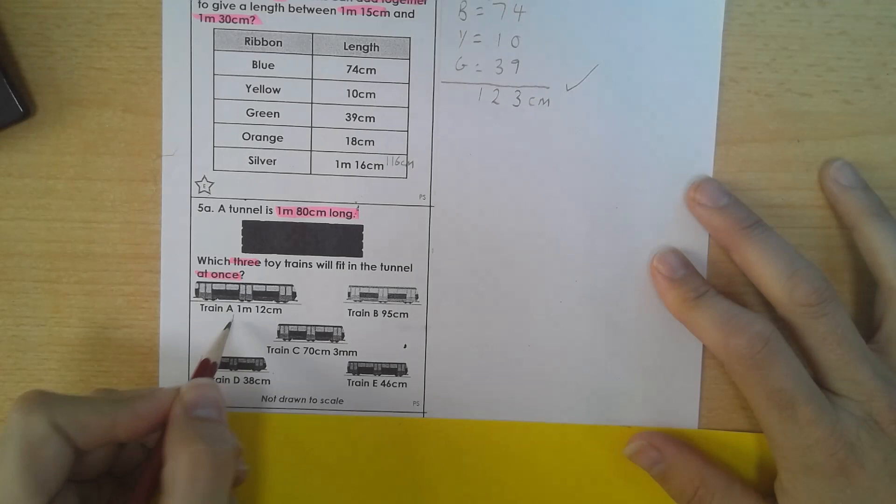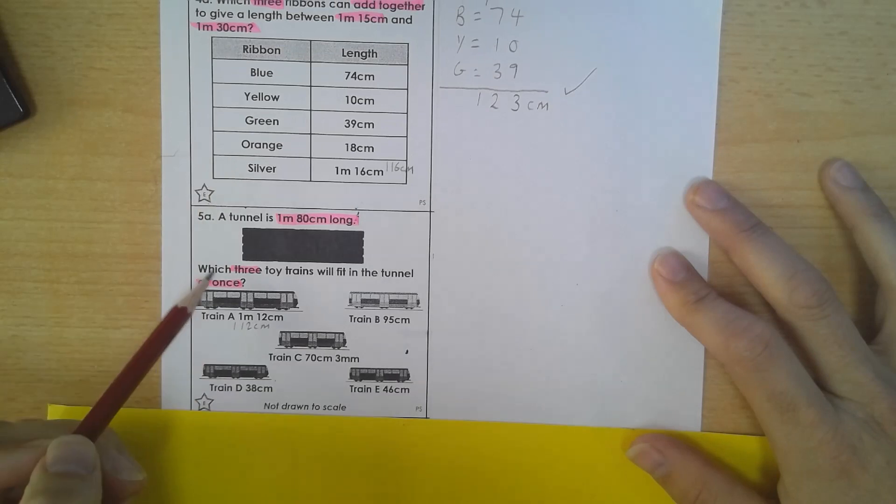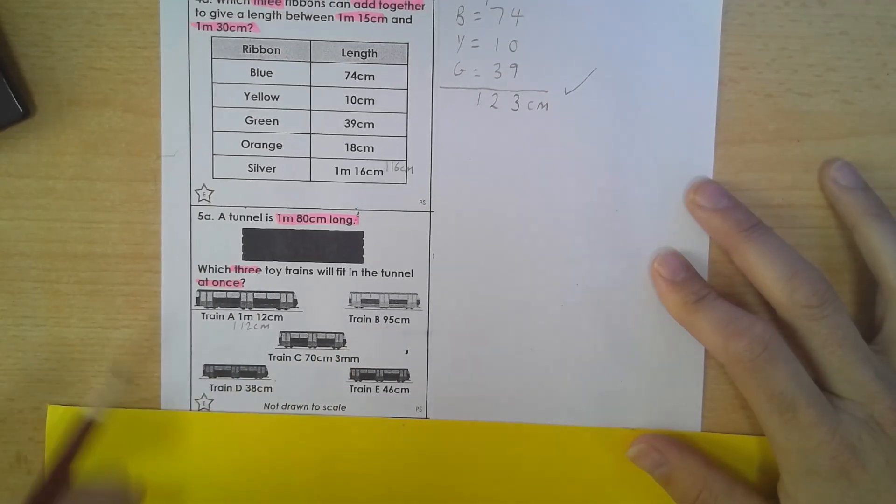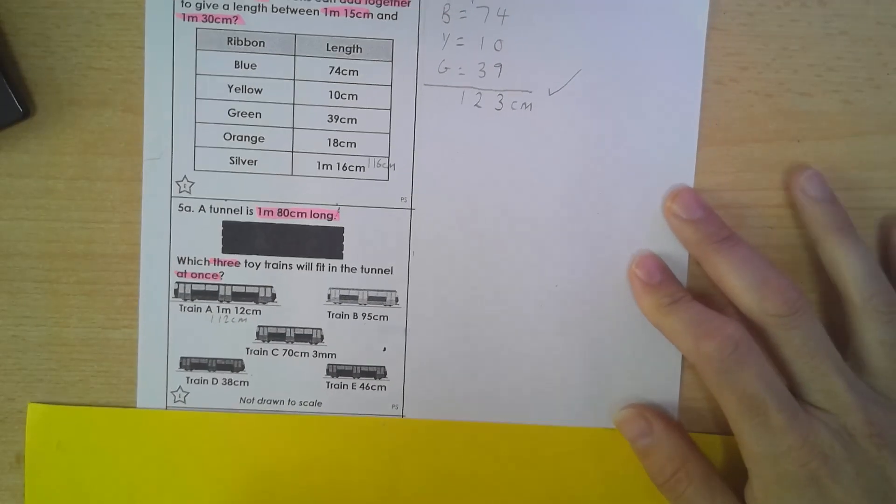Again, I'm going to just convert this one to 112 centimetres. A looks a little long for me again. It's like the silver ribbon. It just feels a little too long when I look at the other ones to be able to add it in. So I'm estimating a little bit to see if that makes sense.